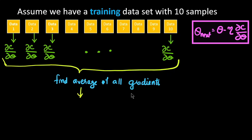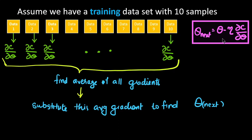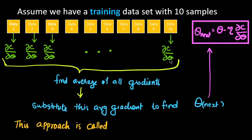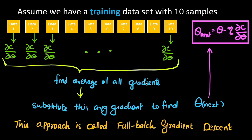This average gradient is substituted into the equation to find the new theta value. Here, ∂C/∂theta means the average gradient taken over all the samples. This approach is called full batch gradient descent, or batch gradient descent. If we have 1 million data points, we find the derivative for all 1 million samples.